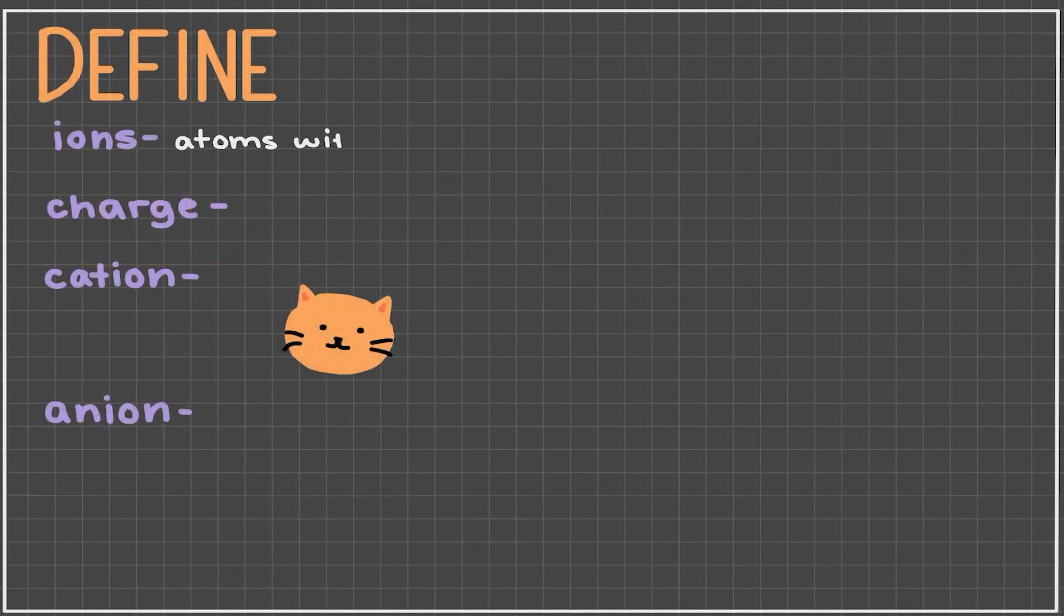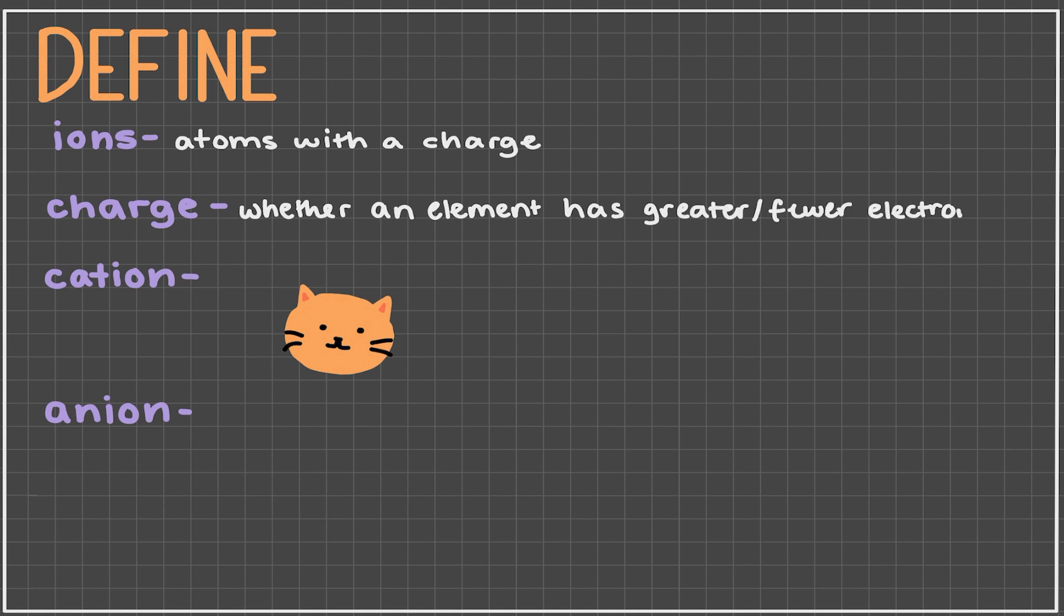First of all, let's define some key terms we'll be using throughout the video. Ions are simply atoms with a charge. This charge is a representation of whether an element has greater or fewer electrons than protons. A cation is an ion with a positive charge. It has more protons than electrons. Since cats have paws, you can remember that cations are positive. Anions are ions with a negative charge. They have more electrons than protons.